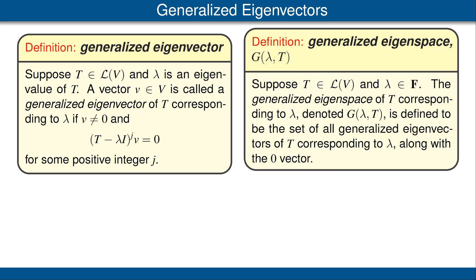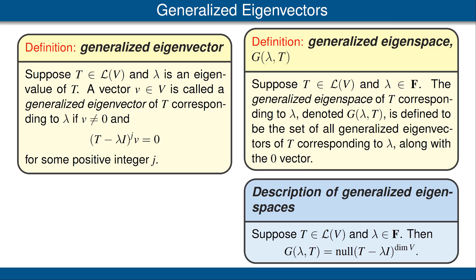Here is one easy result. Suppose t is an operator on v and lambda is a scalar. Then the generalized eigenspace corresponding to lambda and t is equal to the null space of t minus lambda i raised to the power of the dimension of v. In other words, the definition of generalized eigenvector allows any integer j in the exponent, but we only need to consider the integer equal to the dimension of v. This is because the null spaces don't change once you get past the dimension. This result also shows that g of lambda t is a subspace of v, because it is the null space of some operator.